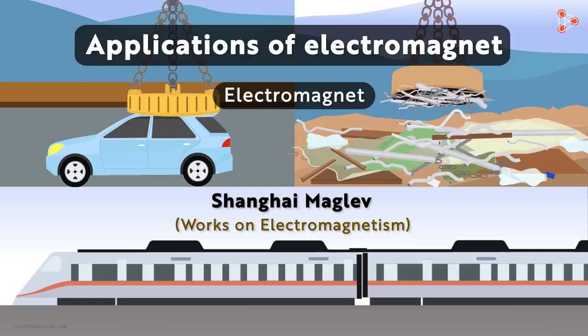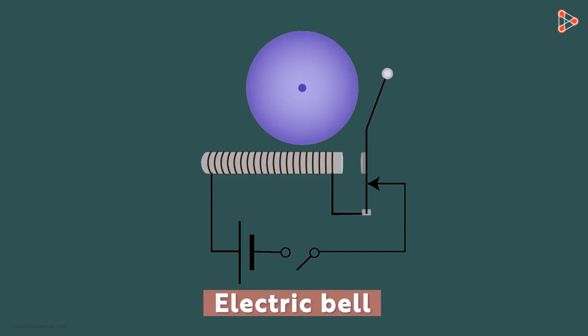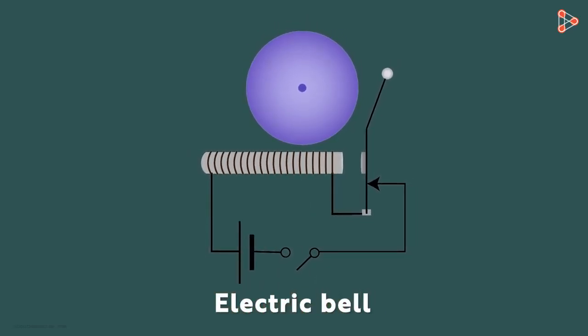Let's understand the use of electromagnets in simple devices such as electric bells. Yes, most of the bells we see nowadays are electric bells. Here is a very simplistic diagram of an electric bell. This is the inner structure of the bell. Let me first tell you the names of the basic components.